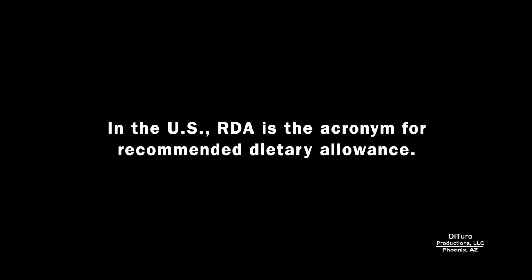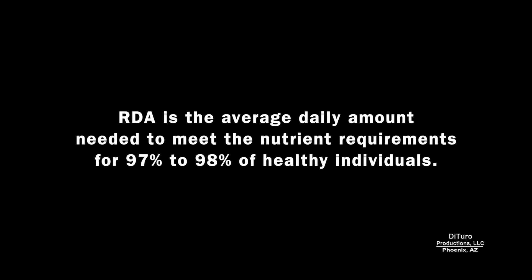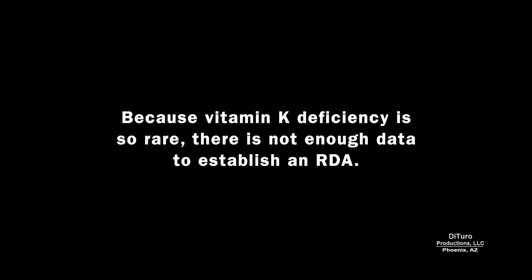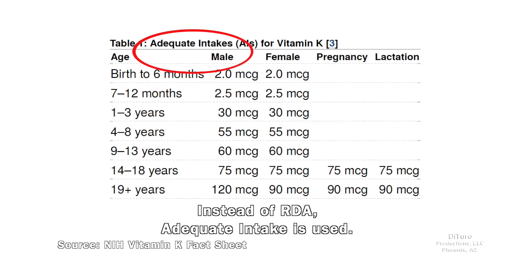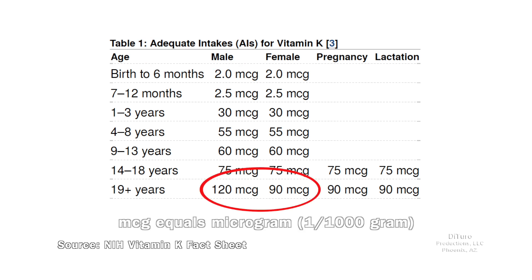In the US, RDA is the acronym for Recommended Dietary Allowance — the average daily amount needed to meet nutrition requirements for 97 to 98% of healthy individuals. Because vitamin K deficiency is so rare, there is not enough data to establish an RDA. Instead, adequate intake is used. As you can see, daily adequate intake is very small: 120 micrograms for men and 90 micrograms for women.